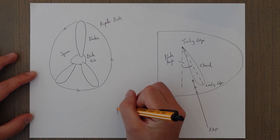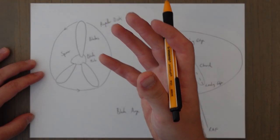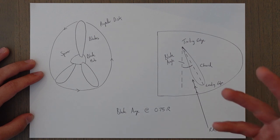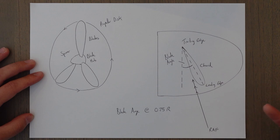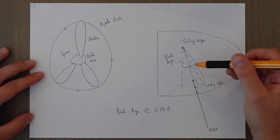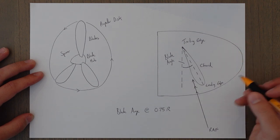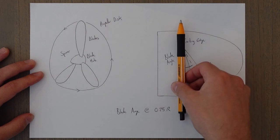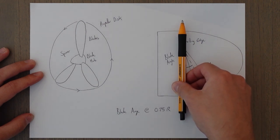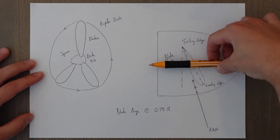The blade angle is measured at 0.75 of the radius of the propeller. The reason for this is that most propellers twist as they go towards the tip, so a standard point has to be chosen for measurements, and it was settled on as 75% of the length. In terms of the size of this blade angle: if you describe something as fine pitch, that means it's closer towards 0, which would be completely vertically mounted; and if something is coarse in pitch it would be closer towards 90, with the chord line up around there.